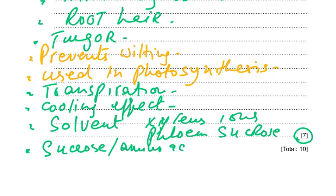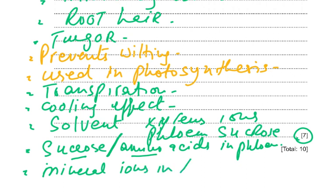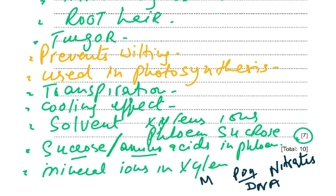In the phloem, sucrose and amino acids are transported, and in the xylem, mineral ions are transported. You could name specific mineral ions: nitrates are needed for proteins, phosphates for DNA, magnesium for chlorophyll inside the chloroplast — just as in humans iron is needed for haemoglobin. That finishes Section B and Section C. I hope this has been helpful to you. Thank you very much for watching and for subscribing to my channel — wish you all the very best.